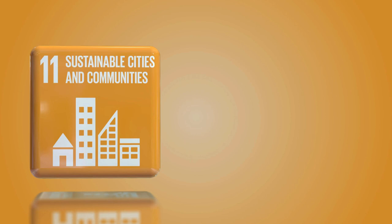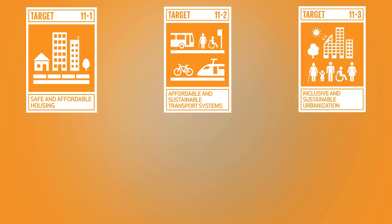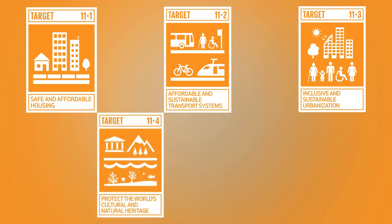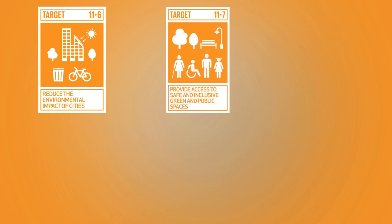The 11th goal includes a series of sub-objectives that specify its scope. These are: safe and affordable housing; affordable and sustainable transport systems; inclusive and sustainable urbanization; protection of the world's cultural and natural heritage; and reducing the adverse effects of natural disasters.